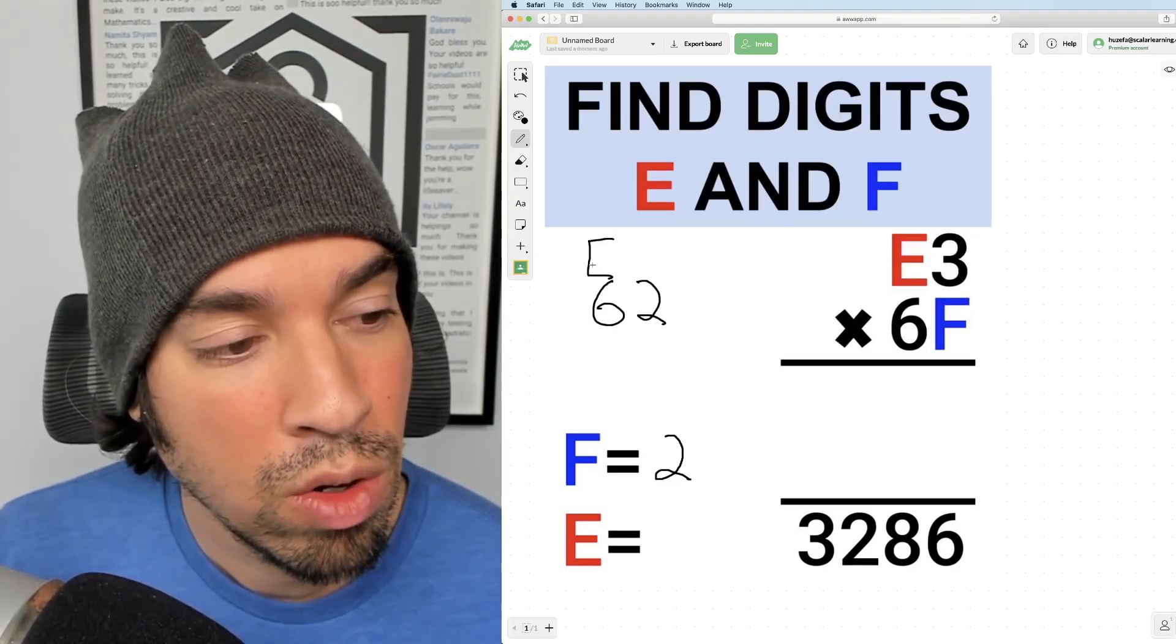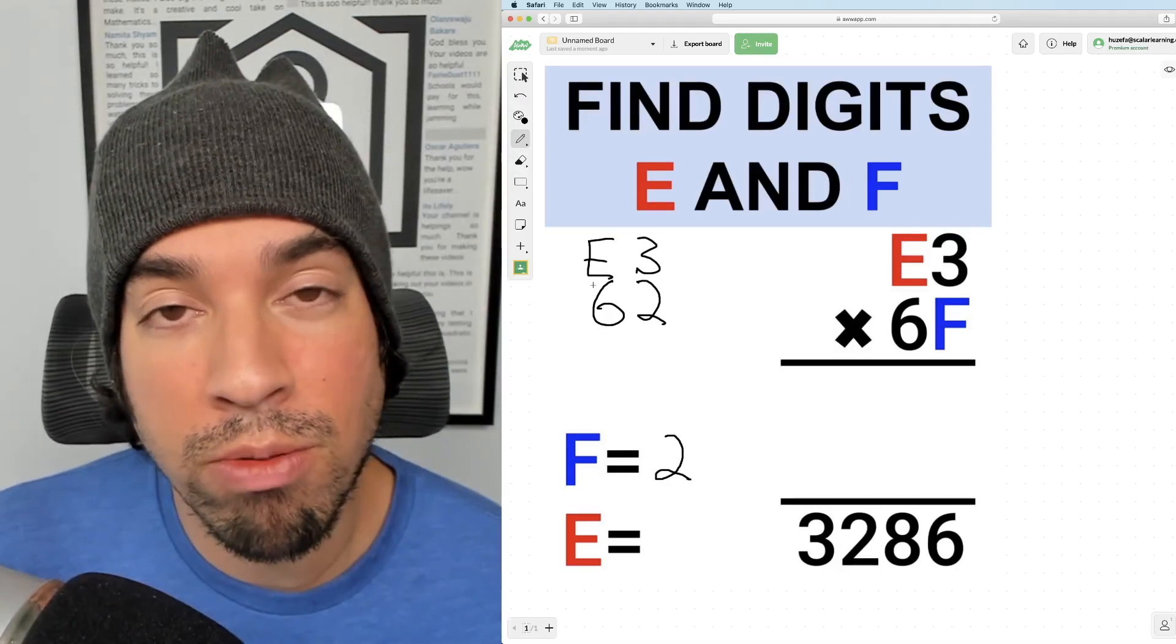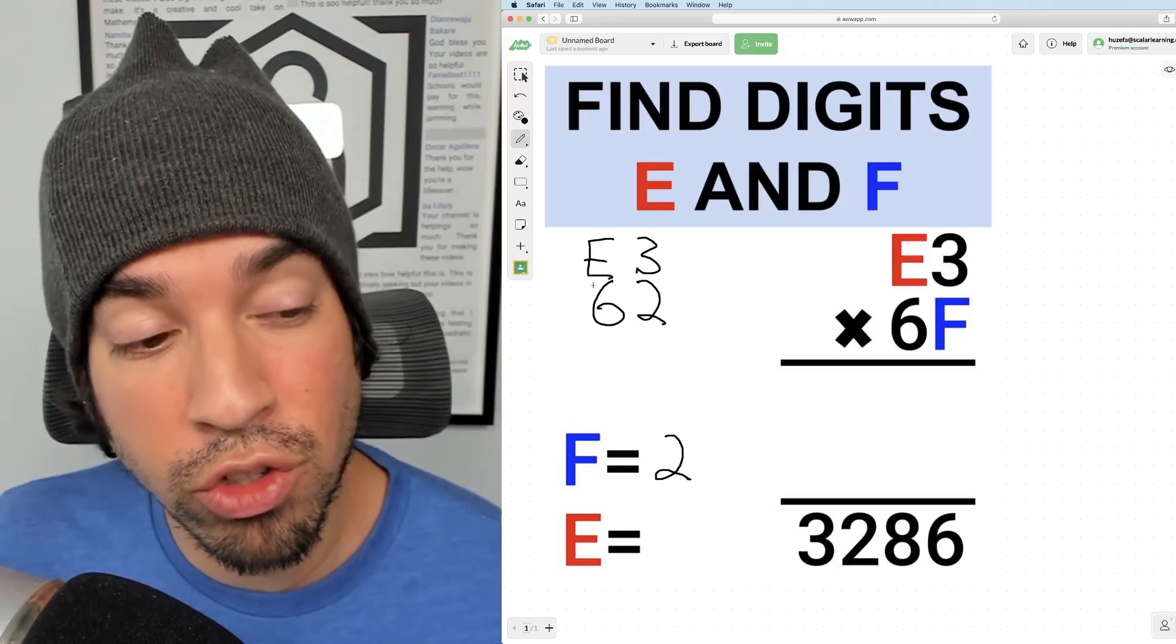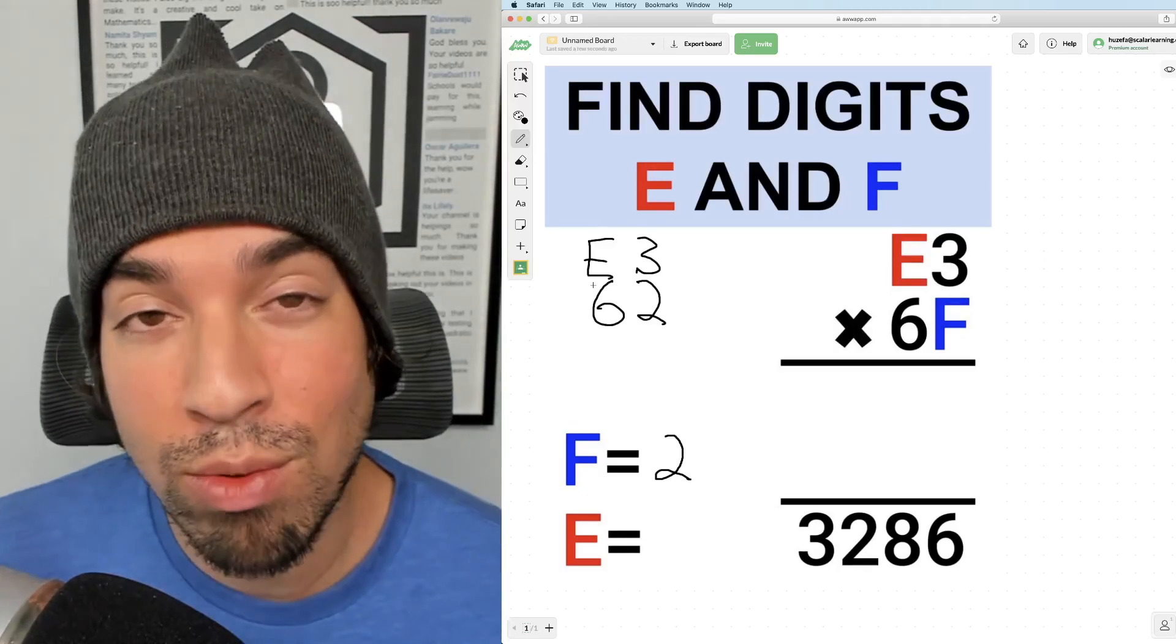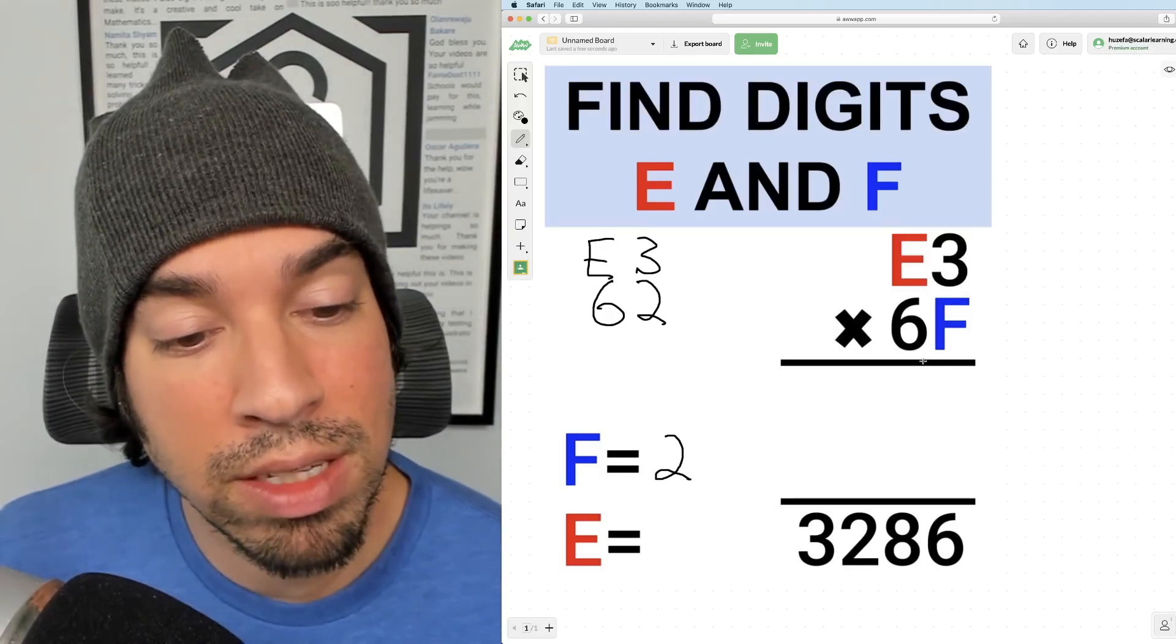So it's 62 times what? Something 3. So there's two ways we could go about this. One, we could now divide 3,286 by 62, and that will help us get that full number. But the other thing we can do is we can play this out and see what happens.